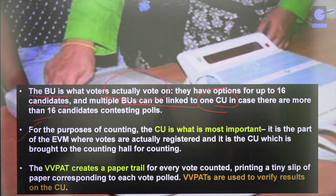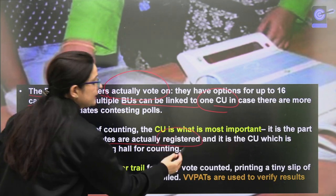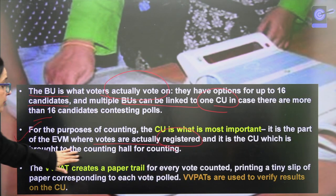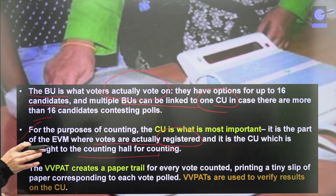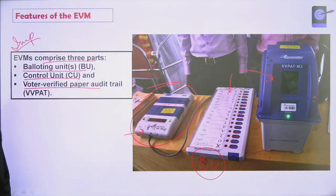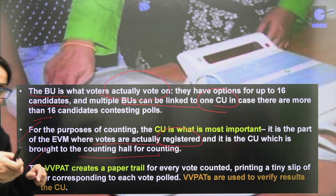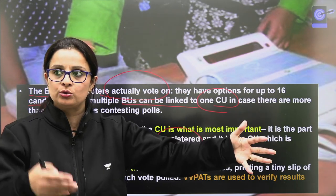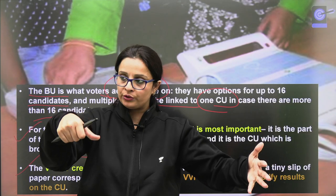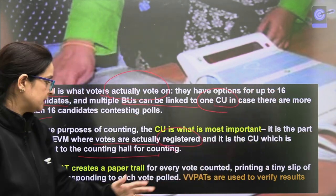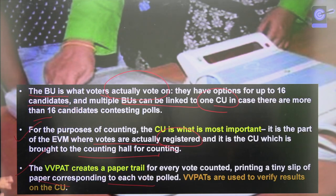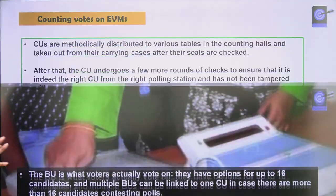For counting, the CU — control unit — is the most important. This is the part of the EVM where votes are actually registered, and it is the CU which is brought to the counting hall for counting. The VVPAT creates a paper trail — for every vote, a tiny slip is printed. So as many buttons are pressed and votes registered, a trail is created. VVPATs are used to verify results on the CU, as the verification slips can be counted to confirm the CU result.